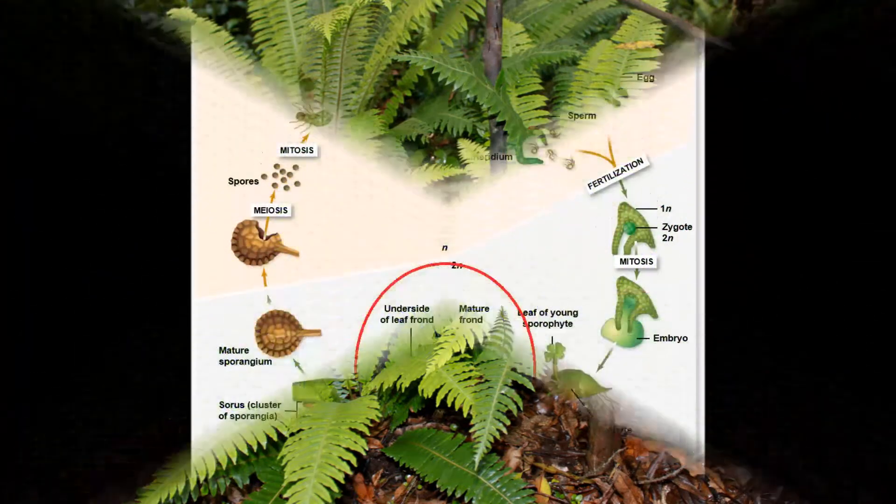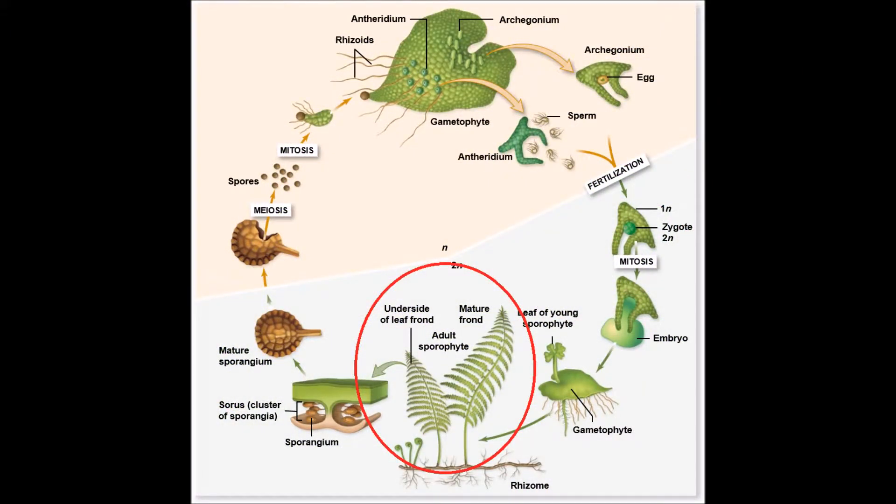When you see the typical looking fern plant, you're looking at the sporophyte generation of the fern. This generation is diploid, meaning it has two sets of chromosomes.